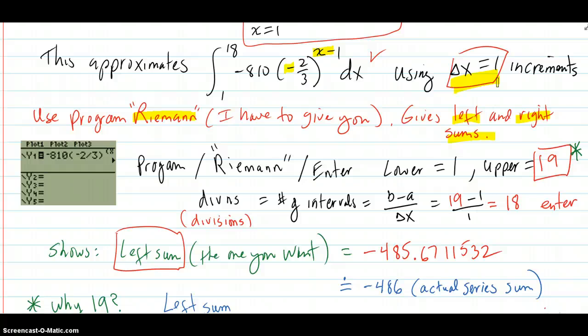So what you'll do is put that term here. And that's just each term, the expression for each term. You're going to put that into y1 right here. Then you're going to click program, select Riemann that I'm going to give you, enter.